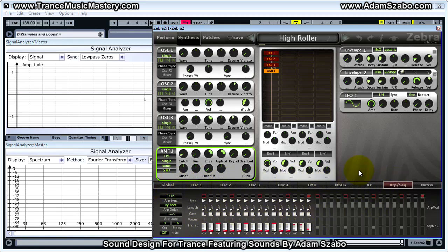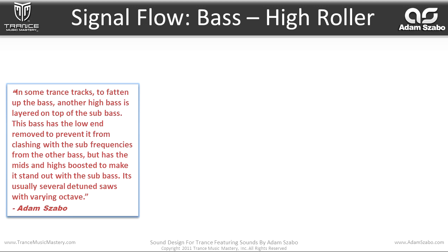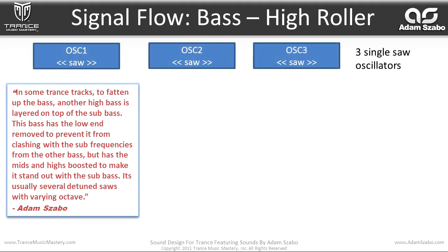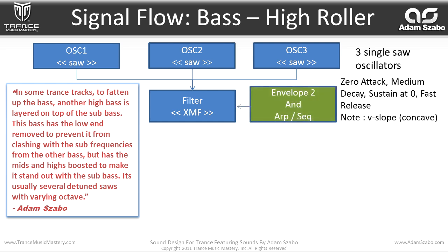Let me bring up the sound map. Adam Sabo says in some trance tracks, to fatten up the bass, a high bass is layered on top of the sub bass. This bass has the low end removed to prevent clashing with sub frequencies, but has the mids and highs boosted. It's usually several detuned saws with varying octave. This patch uses three single saw oscillators mixed together going through a cross modulation filter, with the cutoff frequency modulated by Envelope 2 and the ARP sequencer. Envelope 2 has zero attack, medium decay, sustain at zero, fast release, and uses variable slope concave mode.